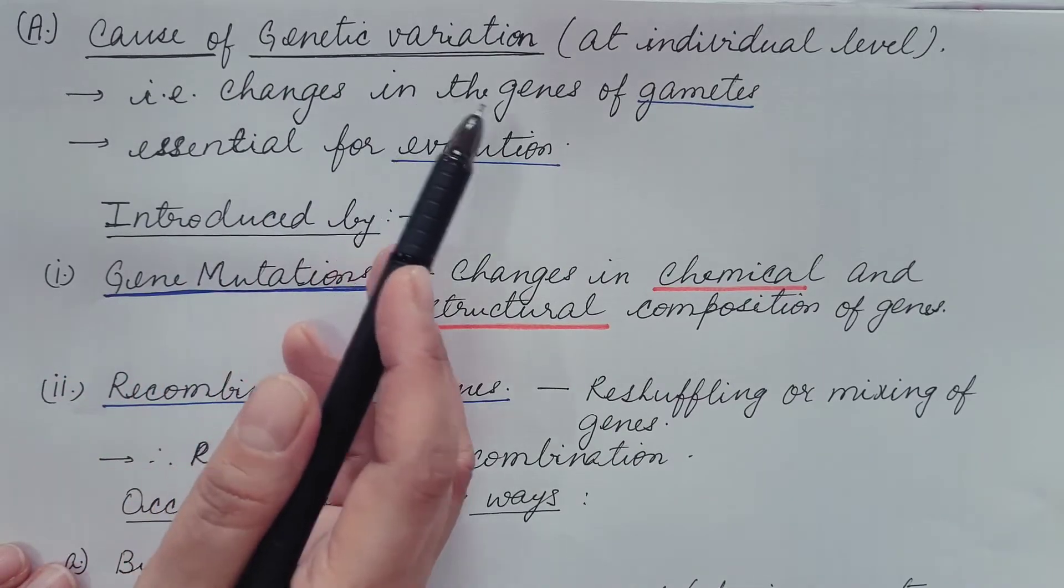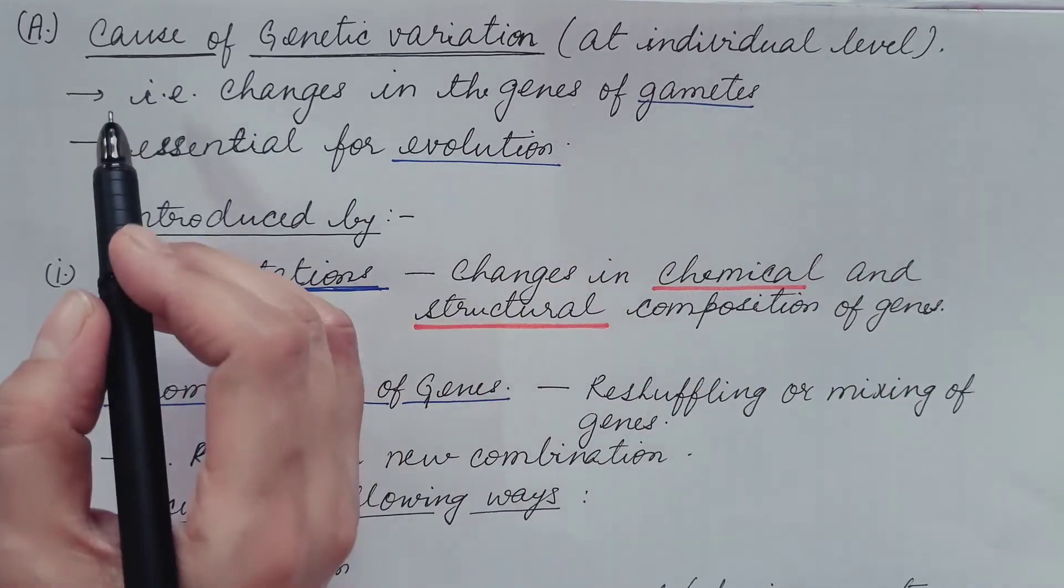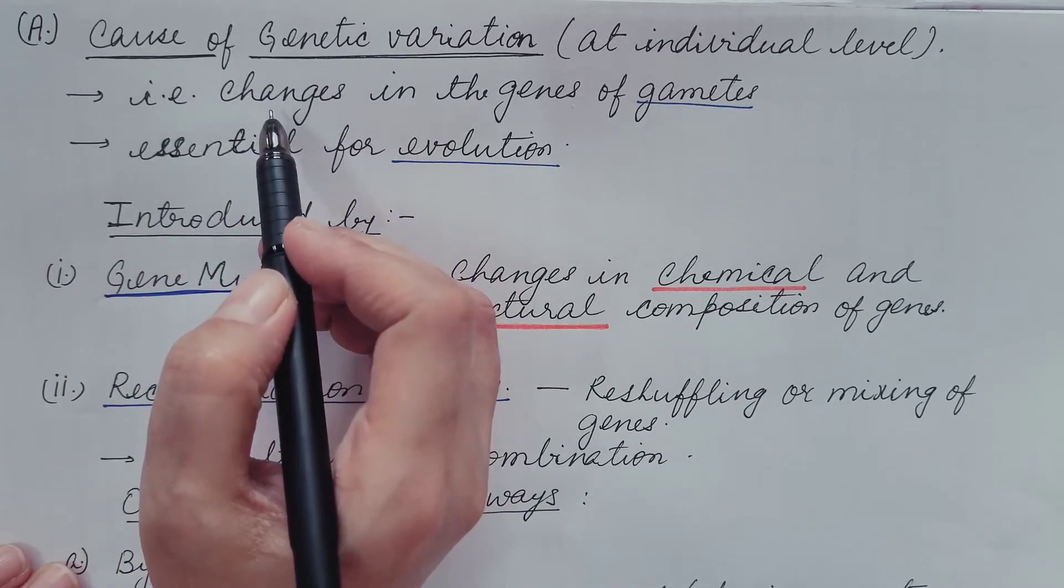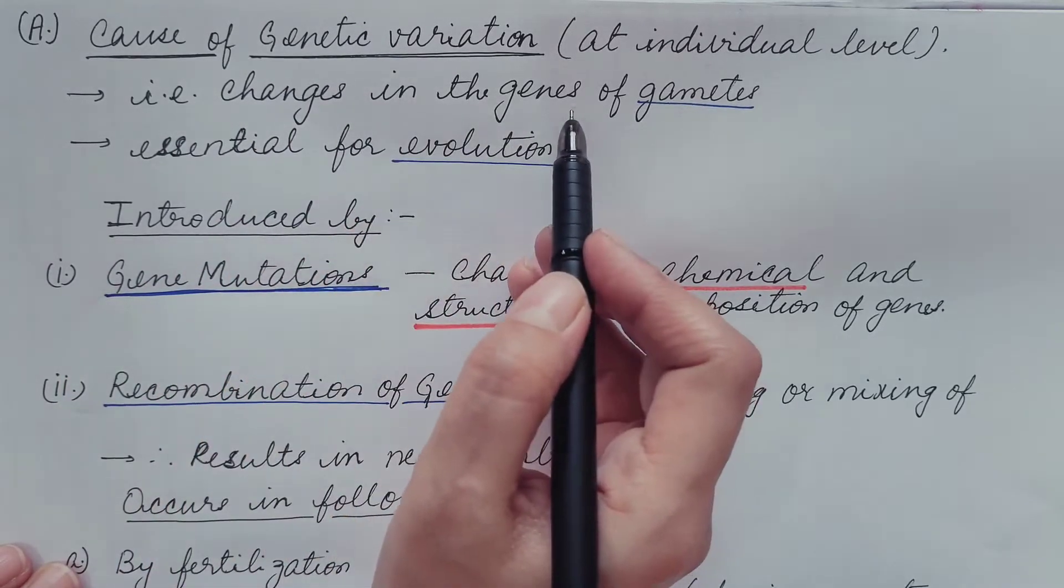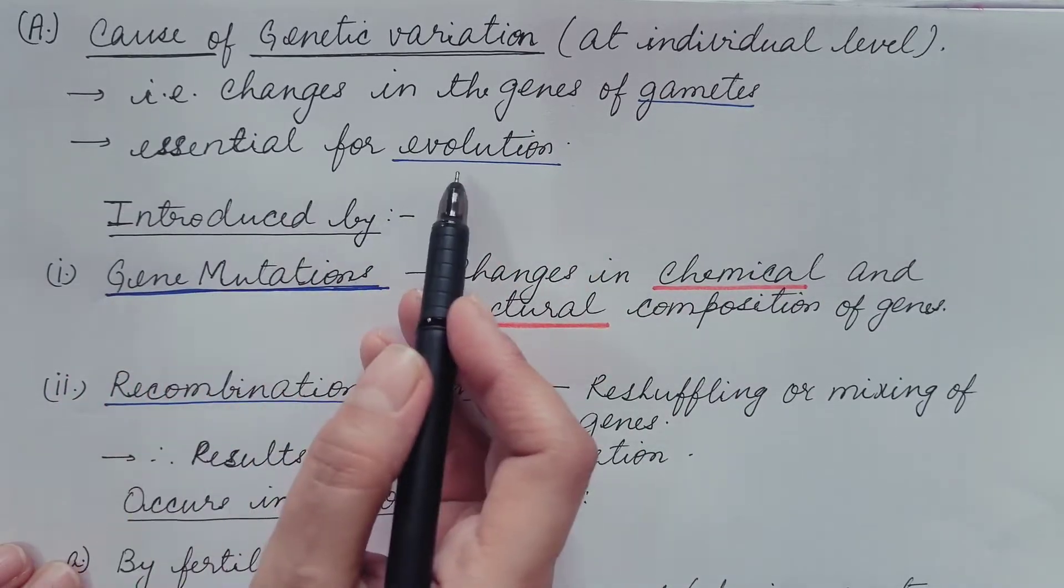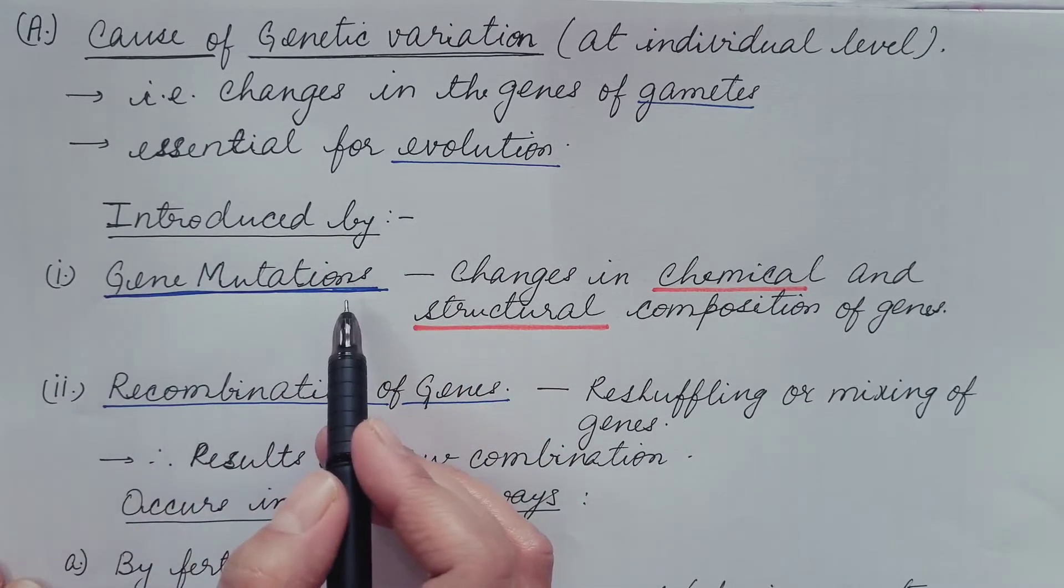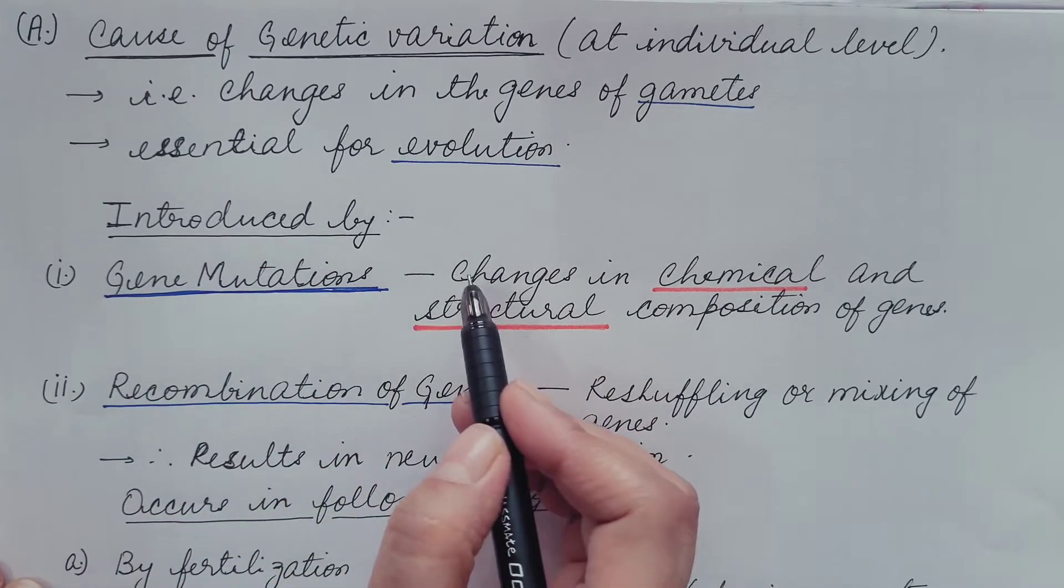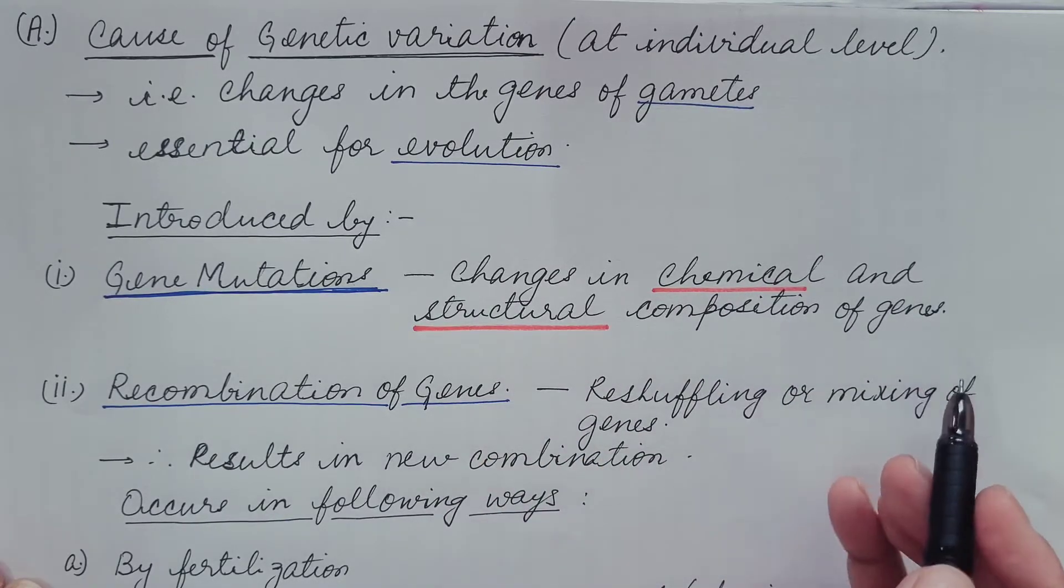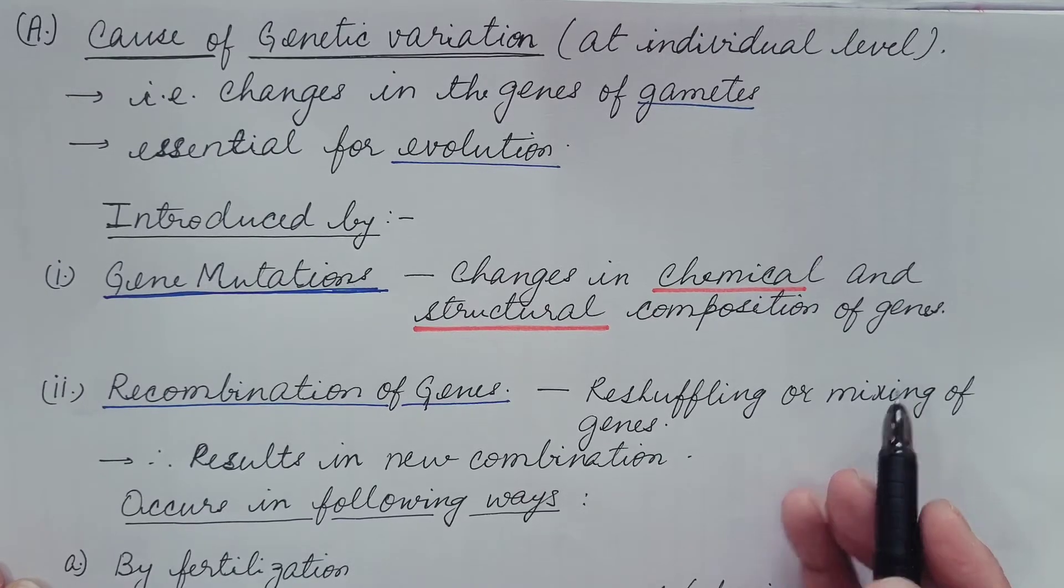Now let us see the causes of genetic variation. First, we will discuss at the individual level. So at the individual level, the genetic variation is the changes in the genes of gametes and this is essential for evolution. And how it is introduced? It is introduced by gene mutations. What is gene mutation? It is changes in the chemical and structural composition of genes. It can occur naturally or it can be induced artificially.